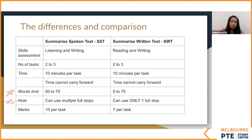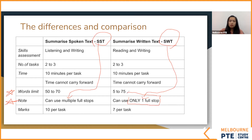Something else you need to remember: for summarize spoken text, you can use multiple full stops. For summarize written text, you can only use one full stop — only one. Don't apply SWT rules to SST. I see lots of students treat SWT and SST the same in mock tests. They are different. These are basic and simple things you should not get wrong.